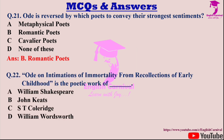Question twenty-two: 'Ode on Intimations of Immortality from Recollections of Early Childhood' is the poetic work of — dash. Options are A: Shakespeare; B: John Keats; C: Coleridge; and D: Wordsworth. Correct answer is D — William Wordsworth.